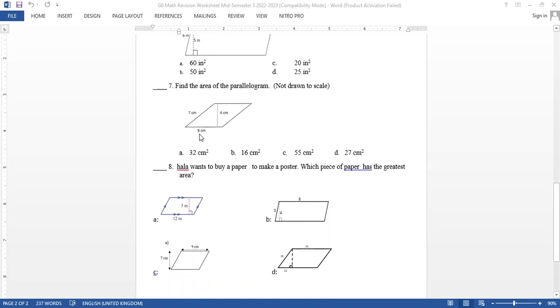Hala wants to buy paper to make a poster. Which piece of paper has the greatest area? If you look at them, all of these figures are parallelograms, so I need to know the area of each one. The first one: 12 multiply 5 equals 60. The other one: 8 multiply 4 equals 32. Then 9 times 7 is 63.